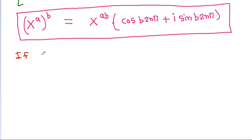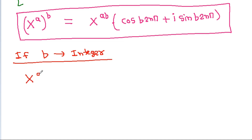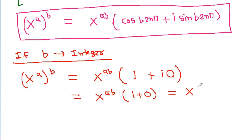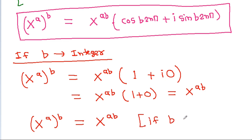Now if b is an integer, then cos(b · 2nπ) = 1 and sin(b · 2nπ) = 0 for all integer n. So (x^a)^b = x^(ab) × (1 + 0) = x^(ab). The familiar rule (x^a)^b = x^(ab) holds only when b is an integer.